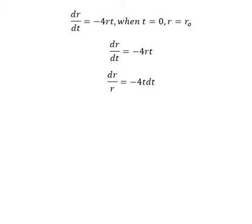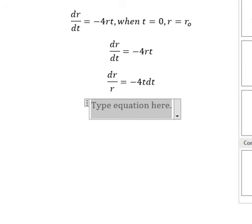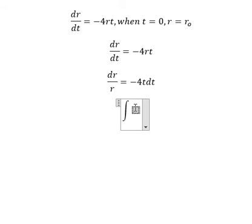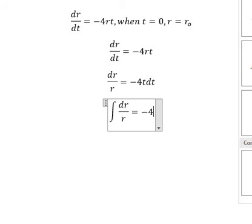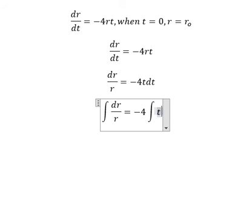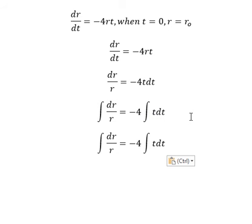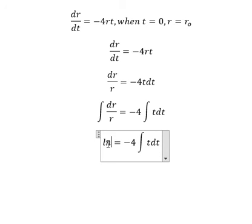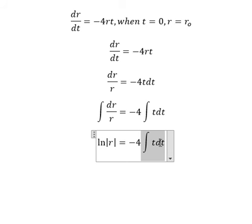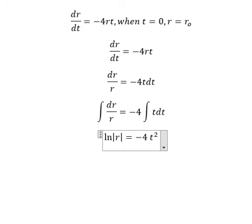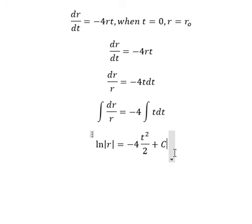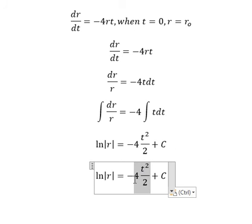Next we need to put the integration for both sides. The integration of this one will have ln of the absolute value of r. The integration of this one gives t squared over 2, and we put about c. Then we simplify and we have negative 2t squared.